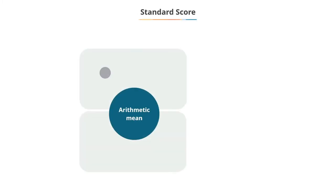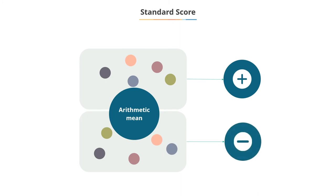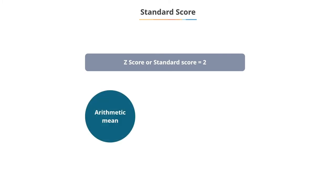Remember, values in the data set above the arithmetic mean have positive standard scores, while values below the arithmetic mean have negative standard scores. This means that a standard score of 2 indicates that the value in the data set exceeds the arithmetic mean by 2 times the standard deviation.